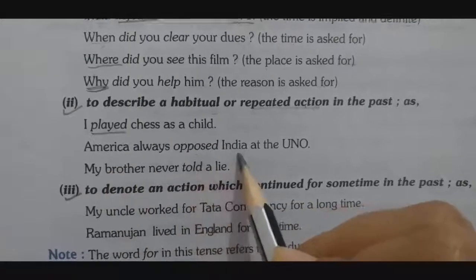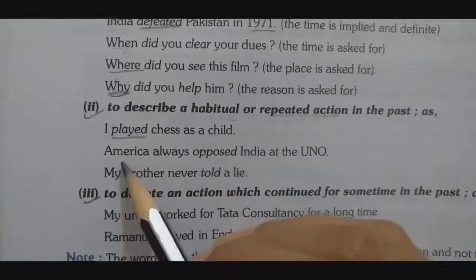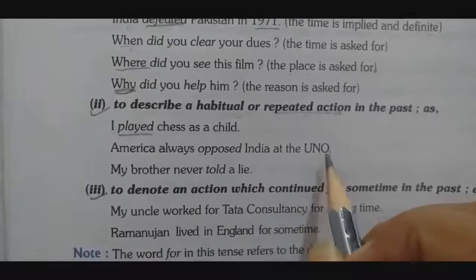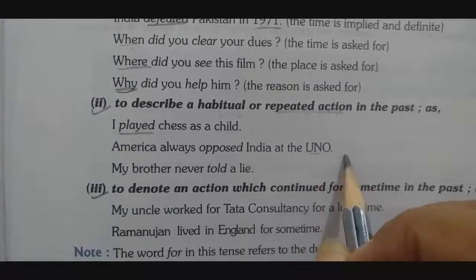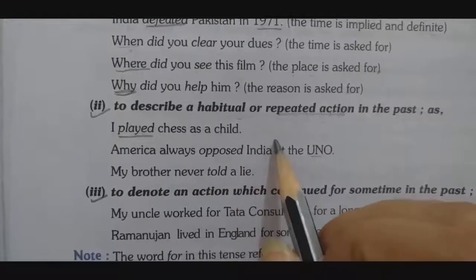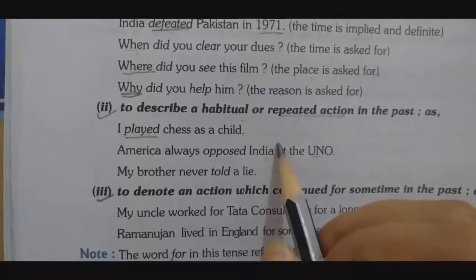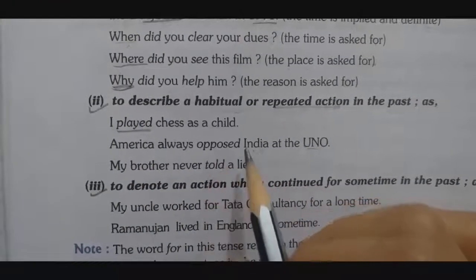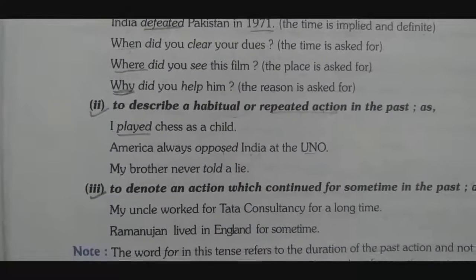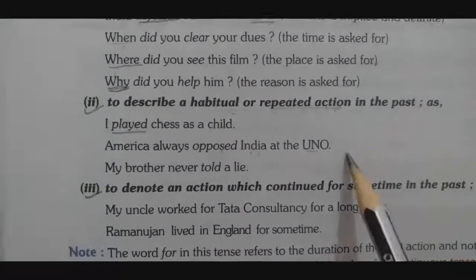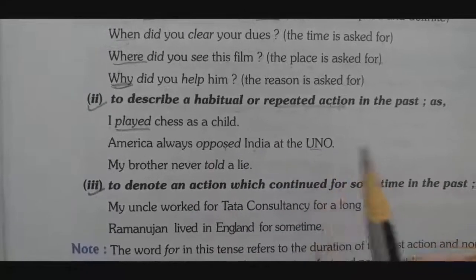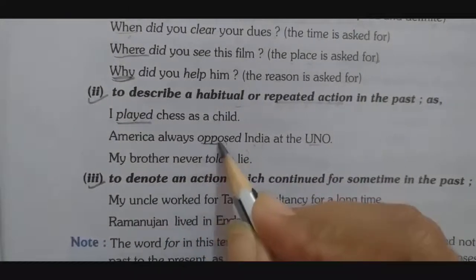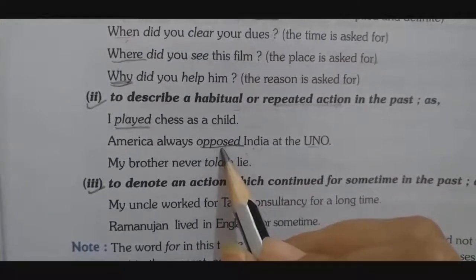Example two: 'America always opposed India at the UNO.' In UNO meetings, America always opposed whatever India said or proposed. This happened in the past — not now. The verb 'opposed' is the past form of the verb. Remember, the past form of verb means verb second form — second form of verb is used in simple past tense.